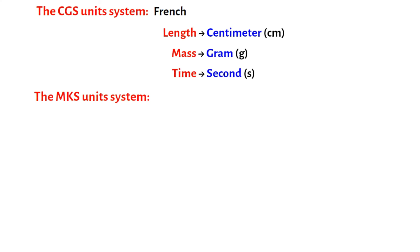The MKS Unit System. This system of units is also known as the metric system of units. In this system, the unit of length is meter, the unit of mass is kilogram, and the unit of time is second.